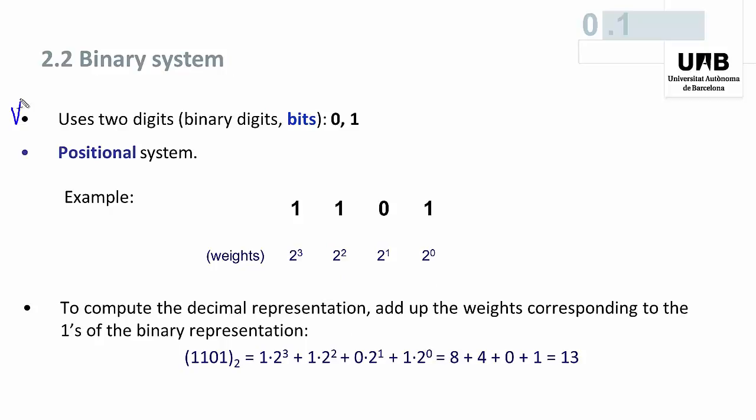We can do the same but with 10 replaced by two. In binary there are two digits instead of ten, called binary digits, or in short, bits. It is a positional system, and the positions of the bits are associated with weights that are powers of two instead of powers of ten.